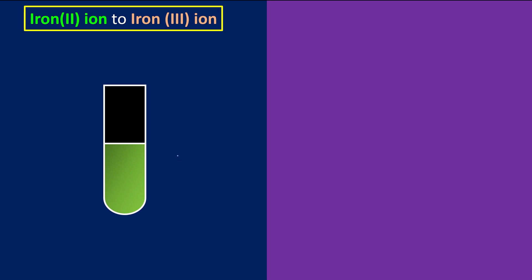Let's look at how we're going to convert iron(II) ion to become iron(III) ions. First, we're going to prepare a test tube that's filled with iron(II) sulfate solution. As we can see here, we're going to have iron(II) ions.